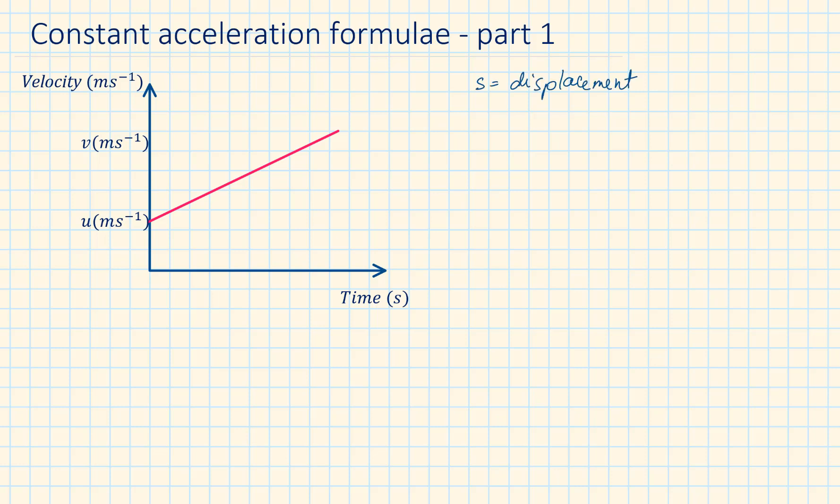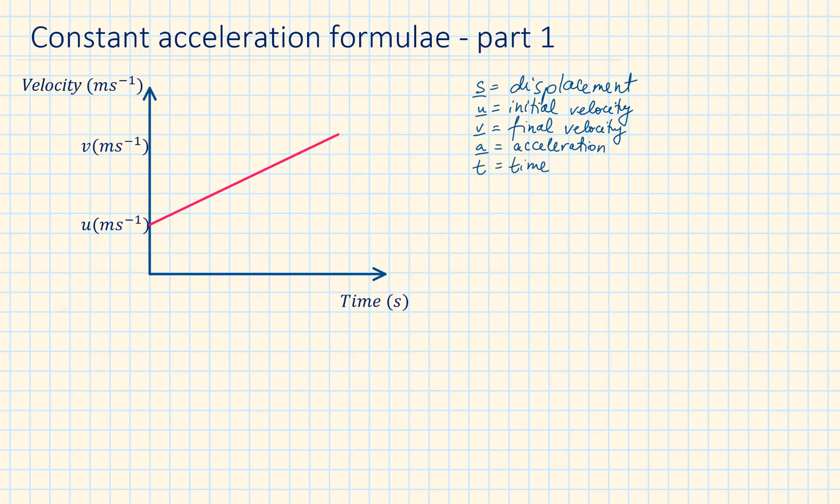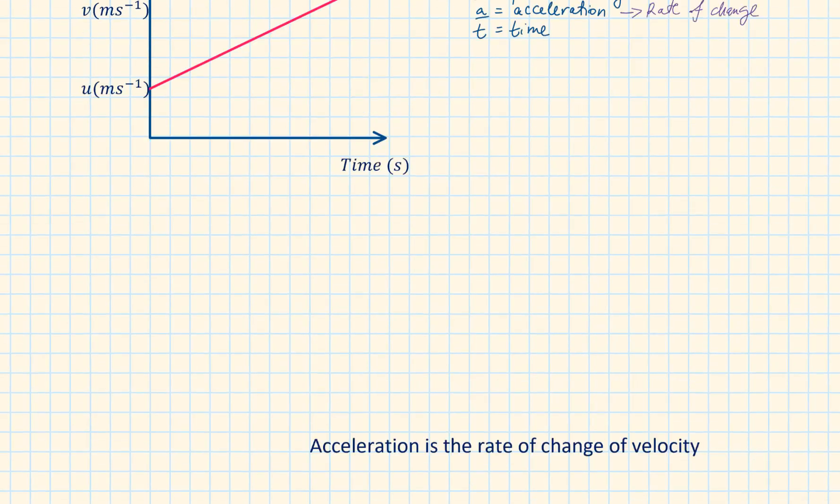The standard set of letters used in the SUVAT formulas are S for displacement, U for the initial velocity, V final velocity, A acceleration and T is the time. I have underlined the SUVA because these are vectors and T is a scalar form.